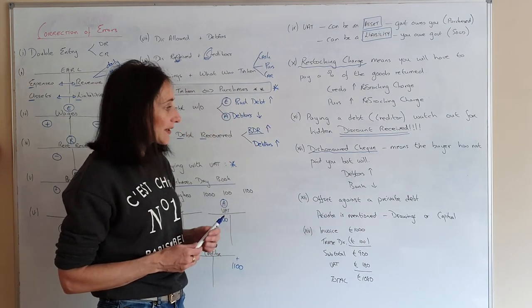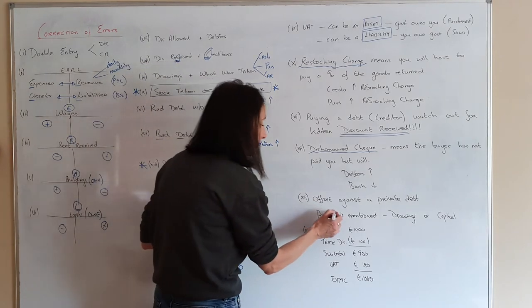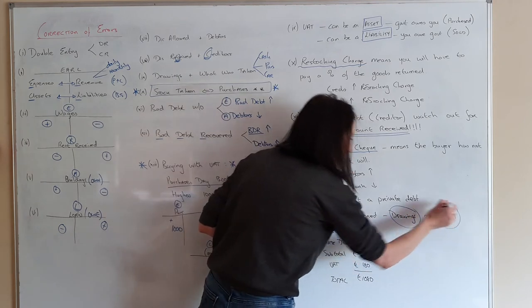Number 13 here. Off debt against a private debt. Now, what I want you to watch. If they mention the word private, it's either going to be drawings or it's going to be capital.